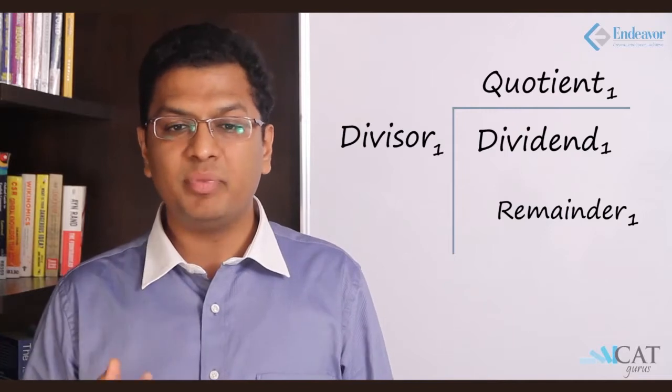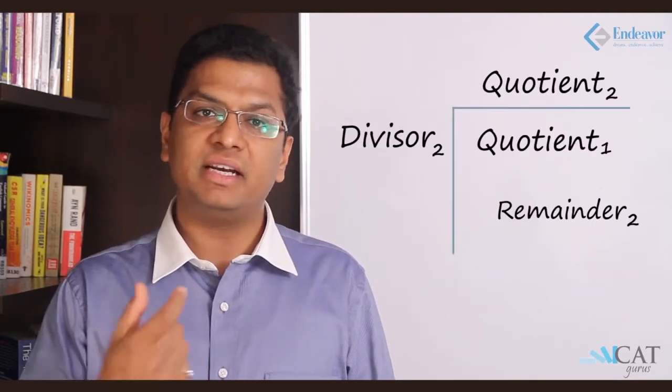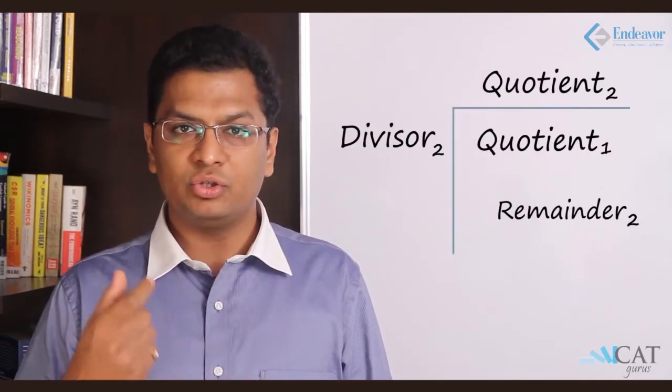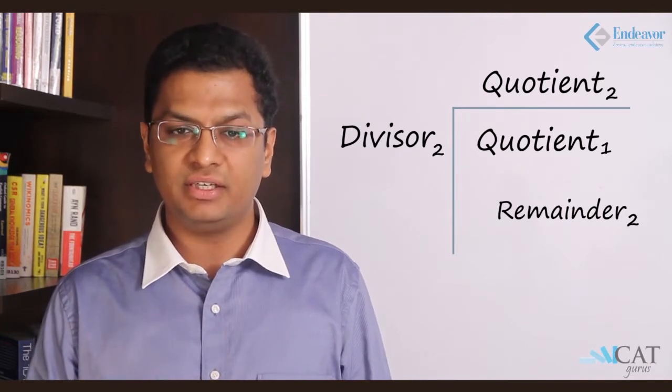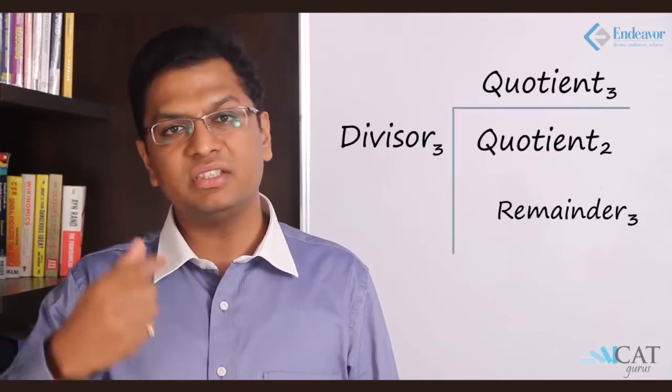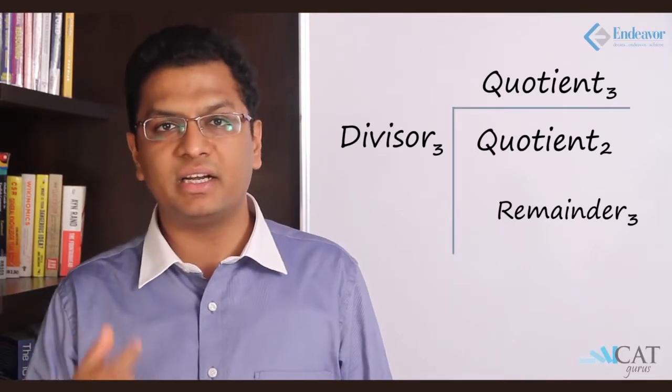Now the quotient becomes the next dividend and we have a new divider coming in. So the new divisor divides the new quotient and gives us another quotient. Now this another quotient goes further and gets divided by a third divisor. So this is how successive division happens.